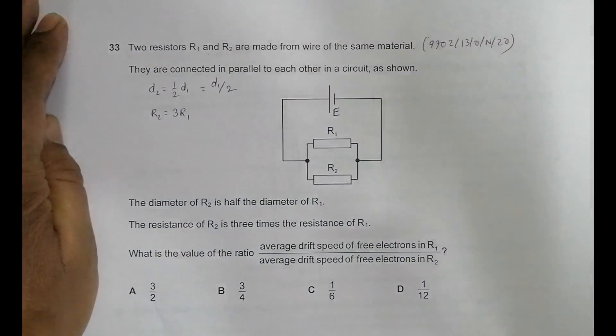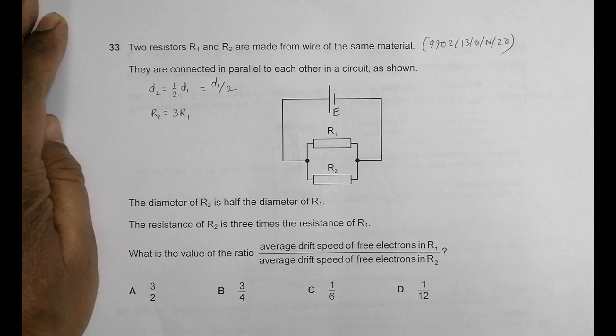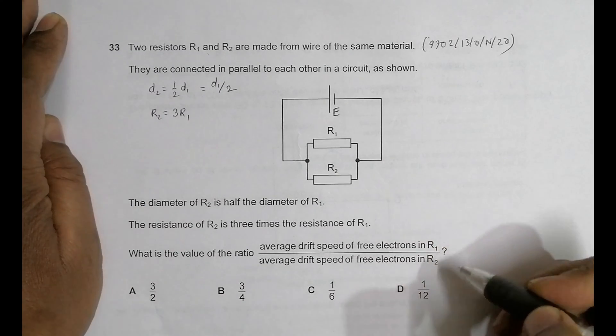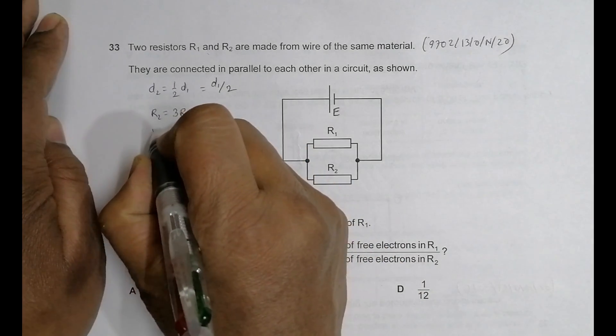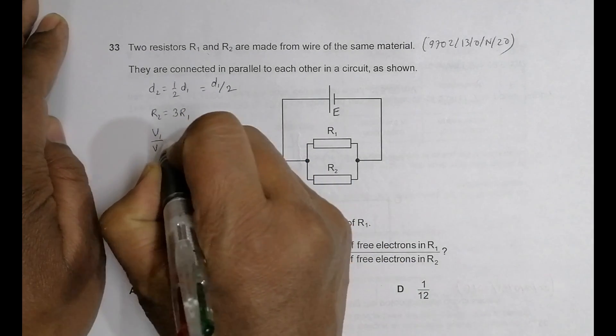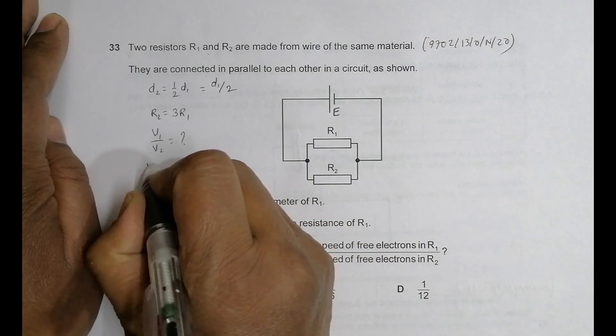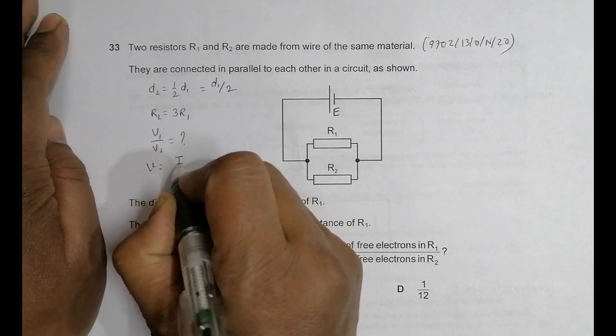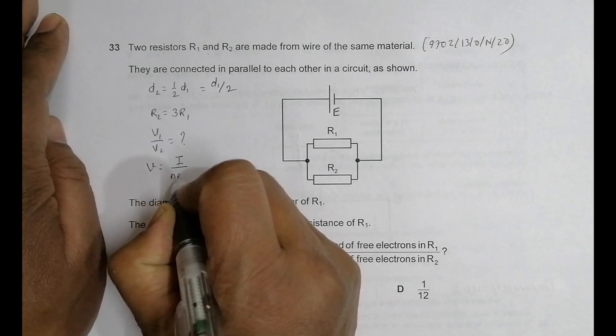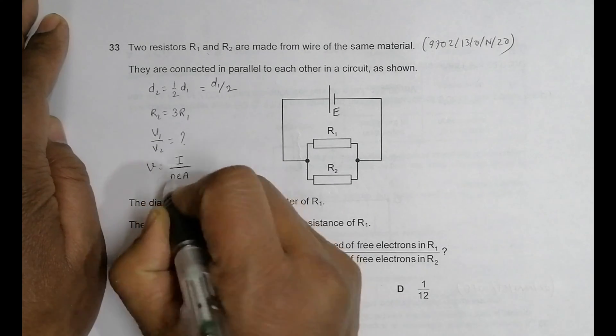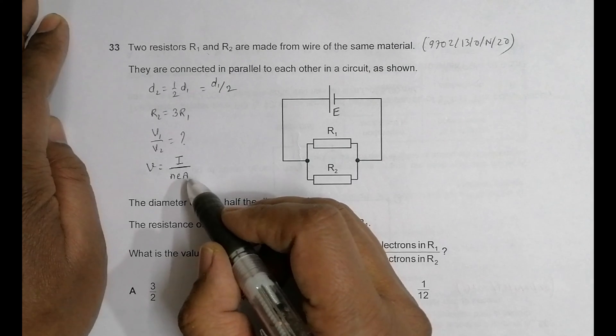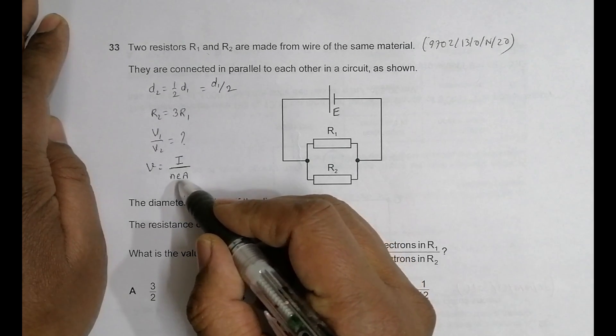What is the value of the ratio of average drift velocity of free electrons in R1 by average velocity in R2? So we have to find V1 by V2. The drift velocity is given by I divided by NEA, where N is the free electron density, A is the cross-section, E is the fundamental charge of electron, and I is the current flowing.